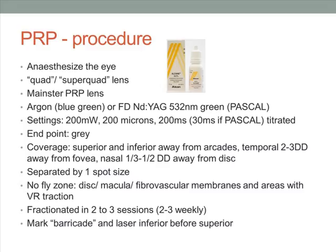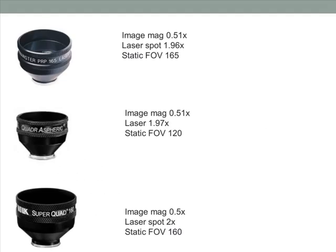The PRP can be done in one session, or fractionated over two to three sessions. Some tips: you may laser a barricade around the no-fly zone, and then laser anything that is peripheral to your barricade. Or you can laser the inferior retina before the superior retina, in case the patient develops a vitreous hemorrhage in between follow-ups. These are pictures and statistics of the three common lenses used for PRP.